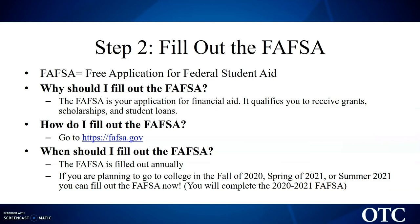The FAFSA is filled out annually. If you're planning to go to college in the fall of 2020, spring of 2021, or summer 2021, you can fill out the FAFSA now and complete the 2020-2021 FAFSA. You will use two years prior tax information on the FAFSA, so for the 2020-2021 FAFSA, you will use 2018 tax information.